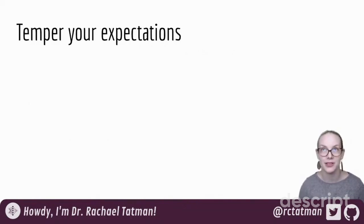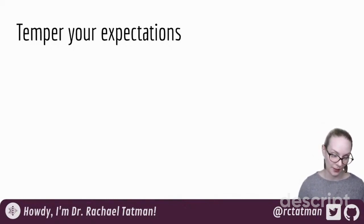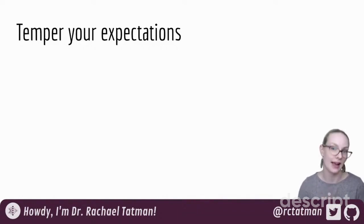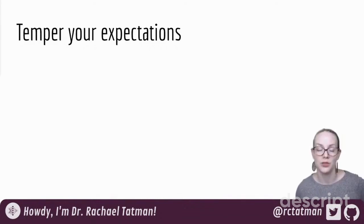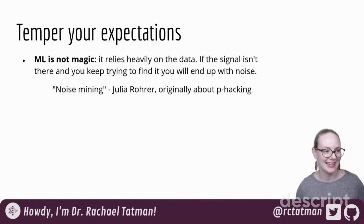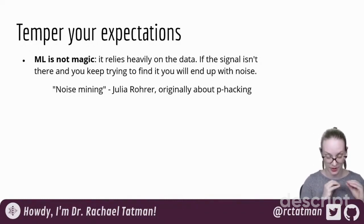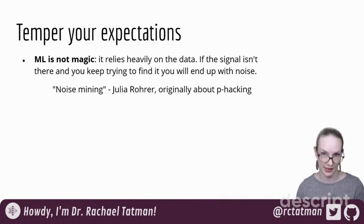Also, temper your expectations. There's a lot of excitement around machine learning, and just because a neural network is a universal function approximator doesn't mean you have everything you'd need to approximate a function for your use case that is actually useful. You may not have everything that you need. Machine learning is not magic — it relies really heavily on the data you provide. If you don't have enough data with enough signal to create a model that can extrapolate from what it's seen, your task is not currently doable.